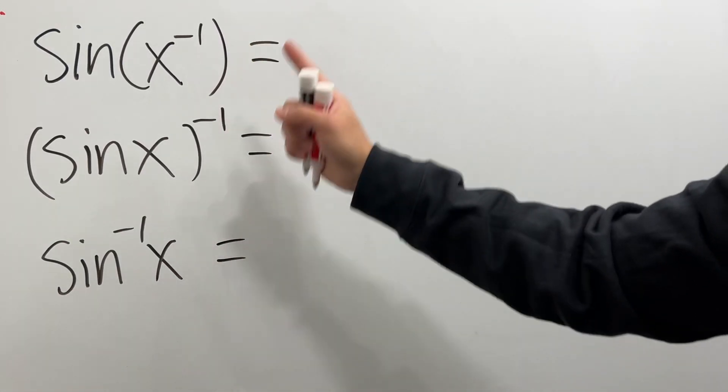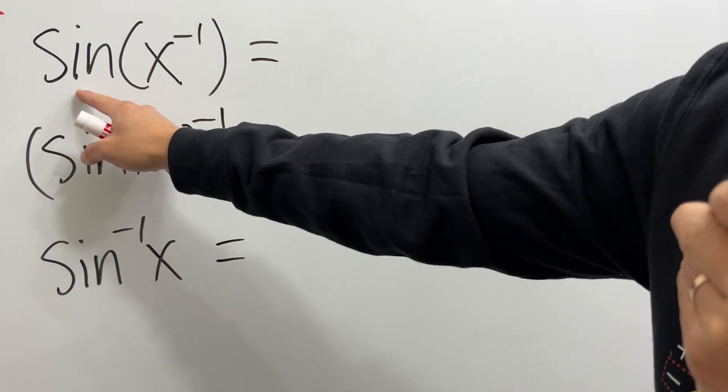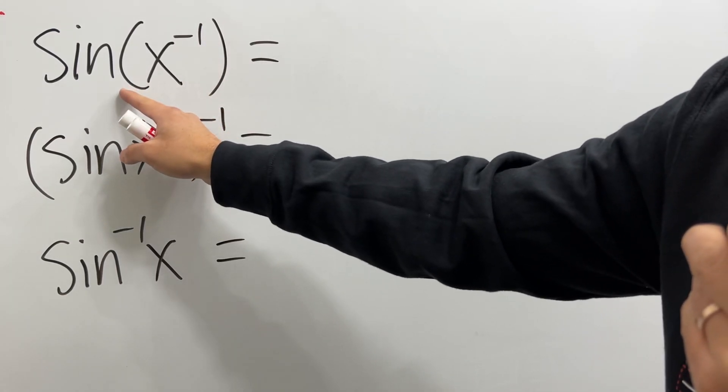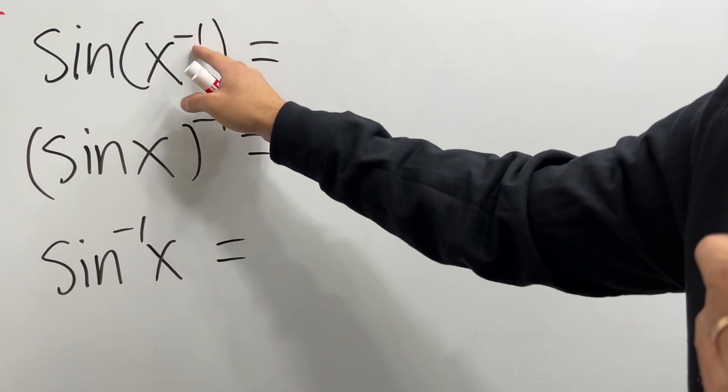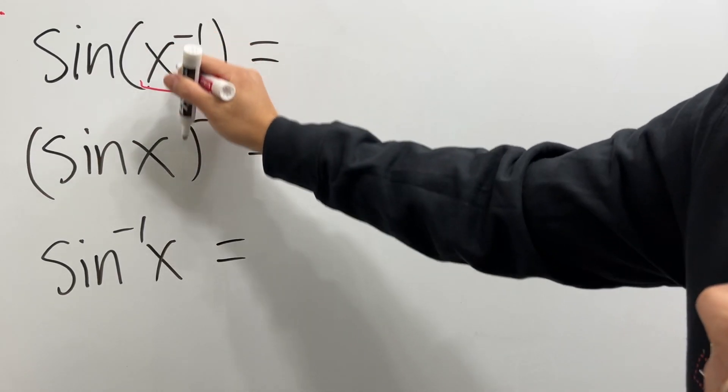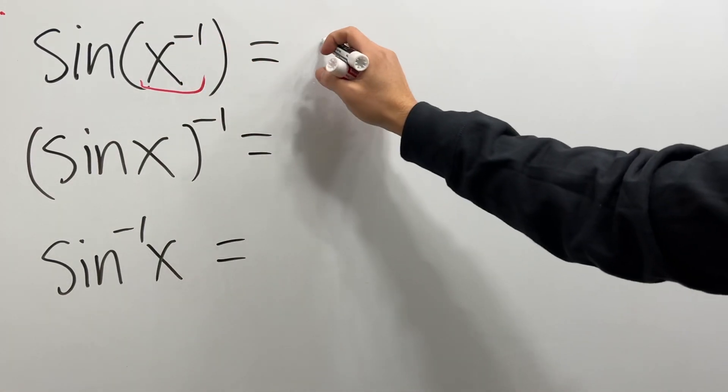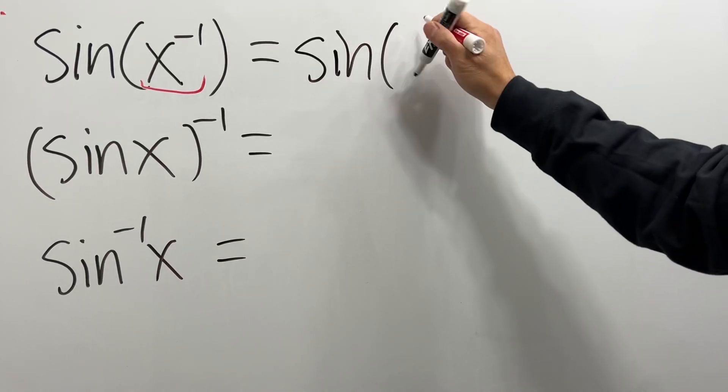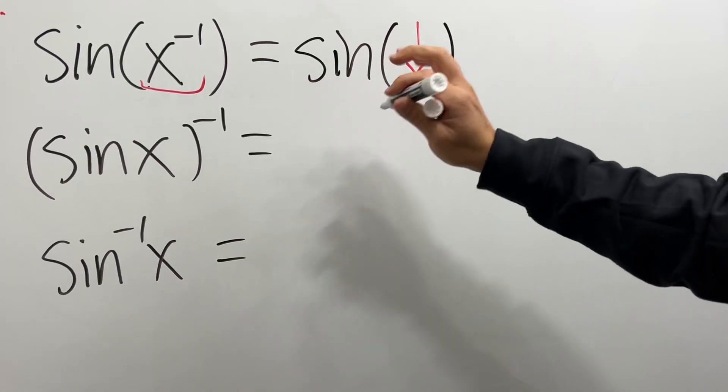Okay, you have to know these three trick expressions. First one, sine of x to the negative 1. Written with the parentheses like this, negative 1 power is only for the x. So this means you are going to do the 1 over x inside of the sine. So this is sine of 1 over x. And then you are done.